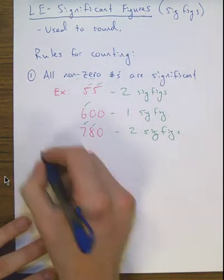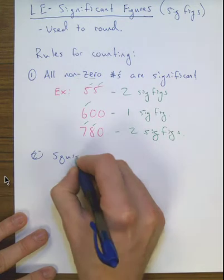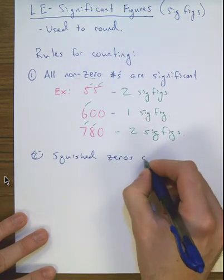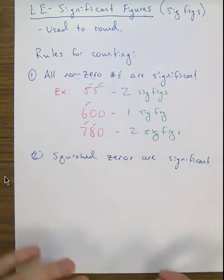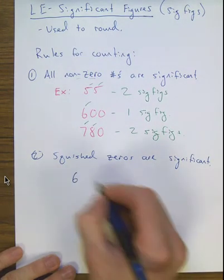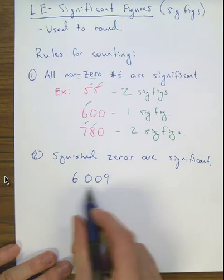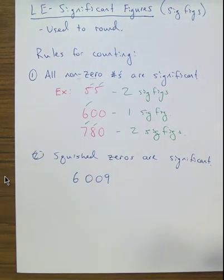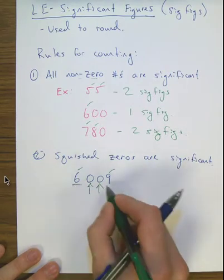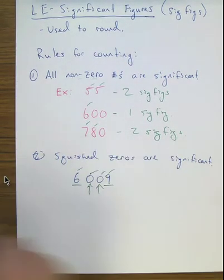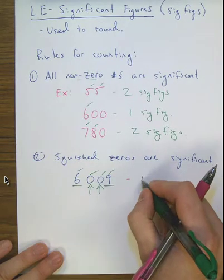Rule number two is that squished zeros are significant. If I have the number 6,009, rule one makes six and nine automatically significant. But the two zeros in between are squished between two non-zeros, so they also count as significant. The total is four sig figs.